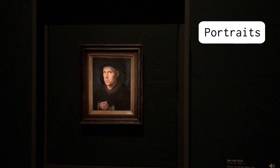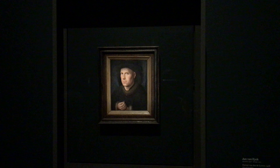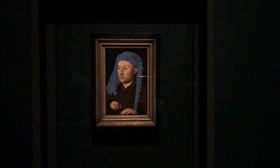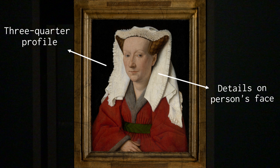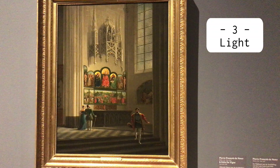His portraits are among the first that weren't showing royals or aristocrats. Van Eyck always follows the same formula when it comes to portraits: the three-quarter profile, a focus on details on a person's face, and contrast between the darker background and the illuminated face.